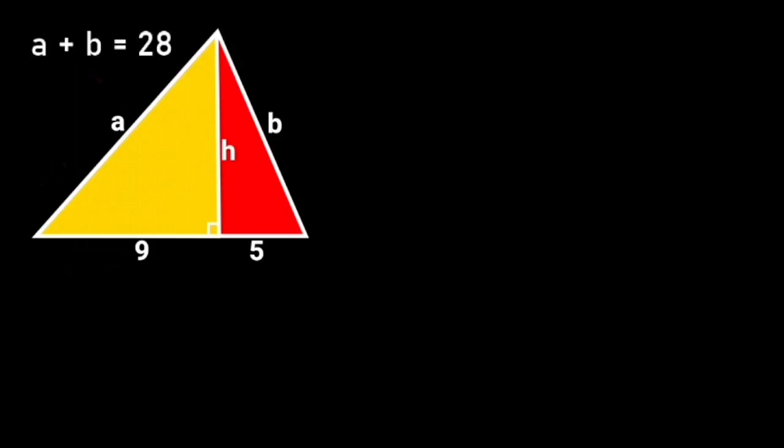In this figure, the base of the two triangles are 9 and 5 respectively. If A plus B is equal to 28, find the value of H.